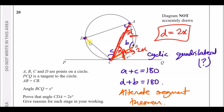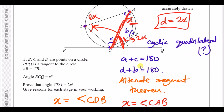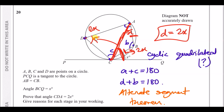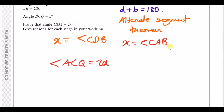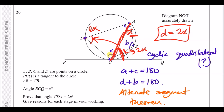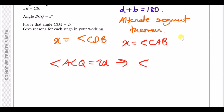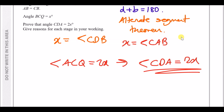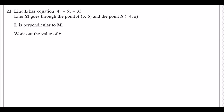Applying the alternate segment theorem once more to the other side of the larger triangle: since angle ACQ is 2x, the angle on the other side — angle CDA — must also equal 2x. Therefore angle CDA equals 2x, and the proof is complete.